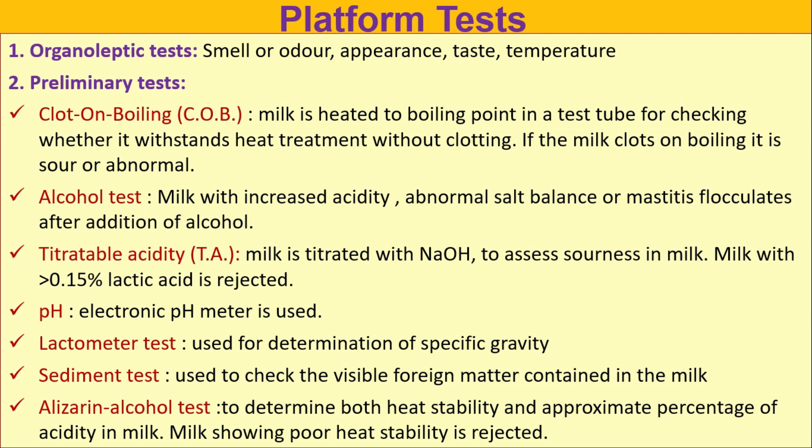The organoleptic test checks smell or odor, appearance or taste, and temperature. The second is the preliminary test. Clot on Boiling (COB): milk is heated to boiling point in a test tube to check whether it withstands heat treatment without clotting — if the milk clots on boiling, it is sour or abnormal. Alcohol test: milk with increased acidity, abnormal salt balance, or mastitis flocculates after addition of alcohol.